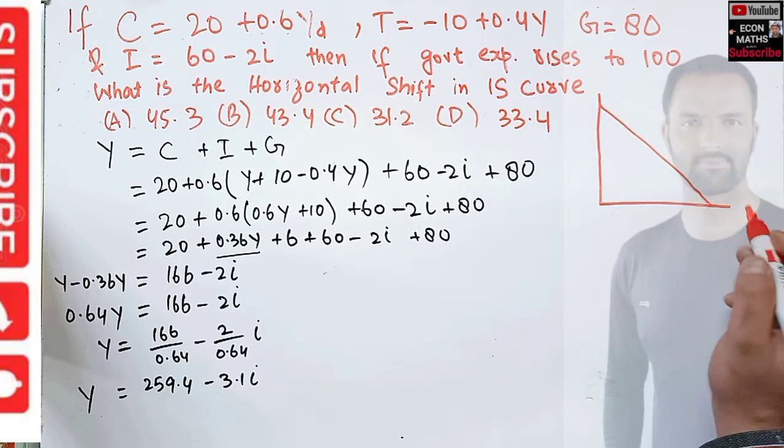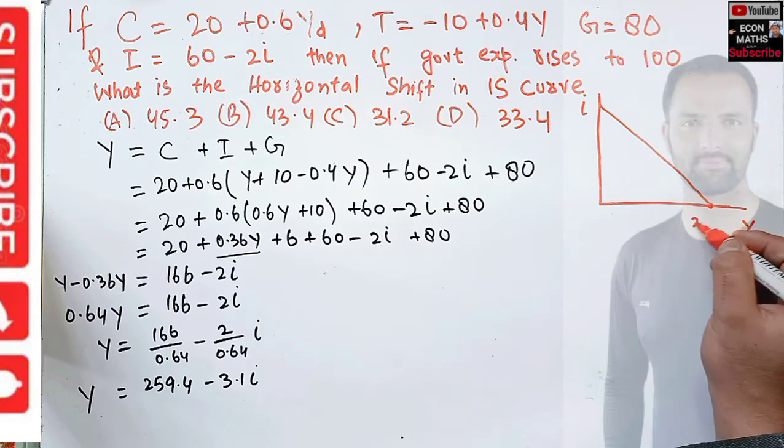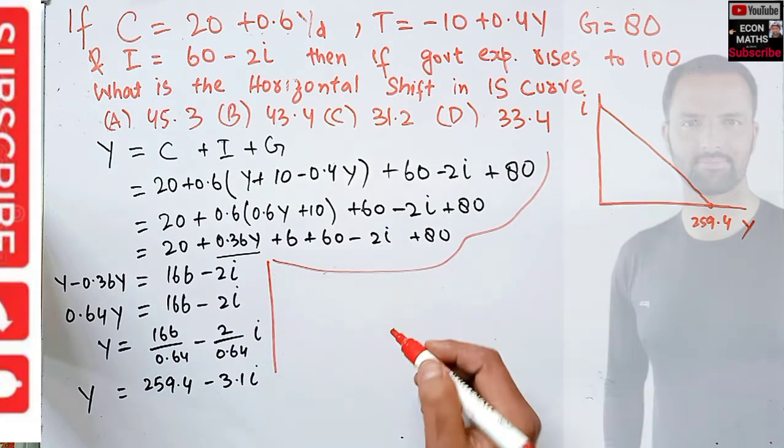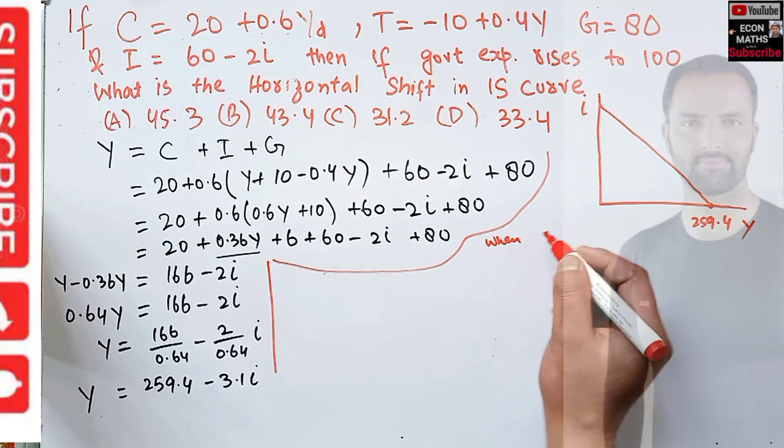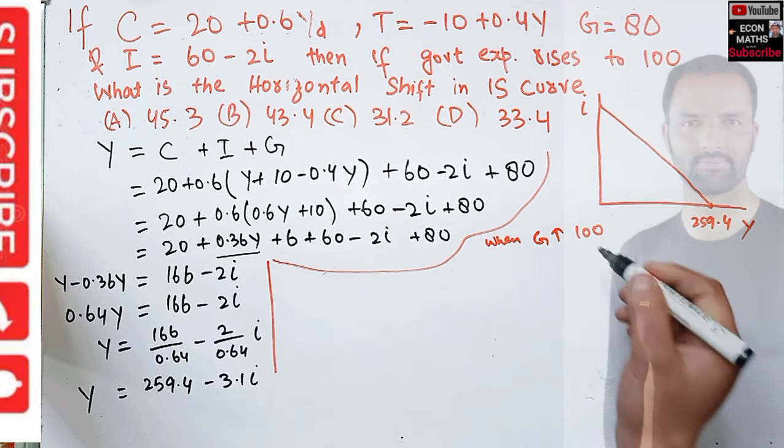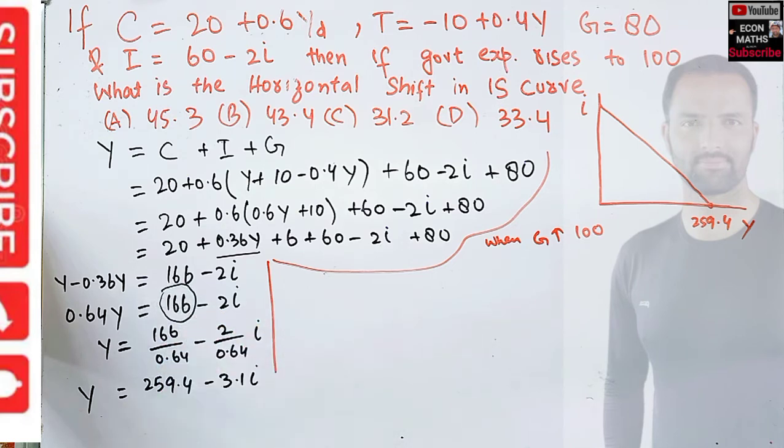Let me draw it here. Originally this is our IS curve with Y on this axis and rate of interest on this axis. The intercept is 259.4 originally.